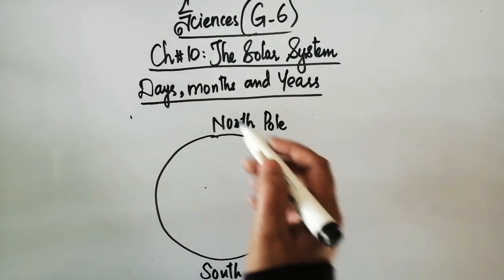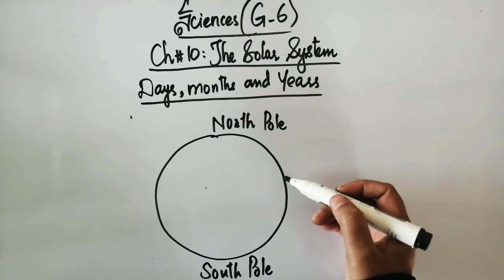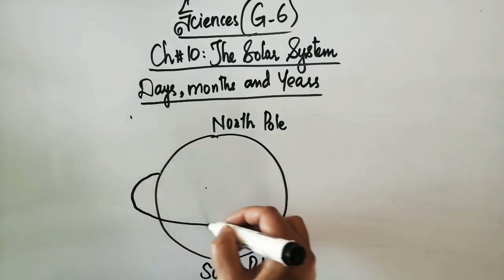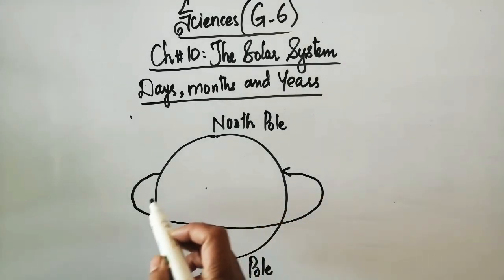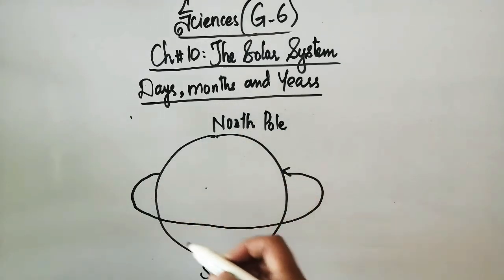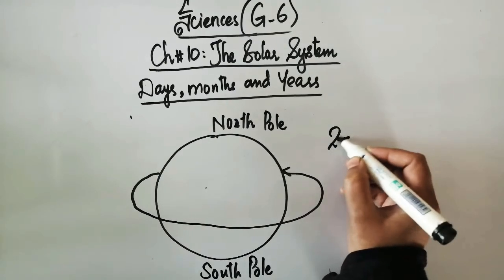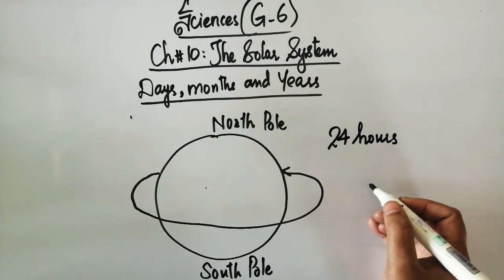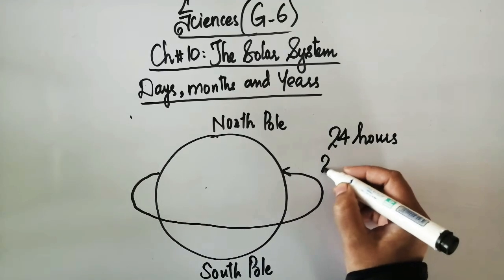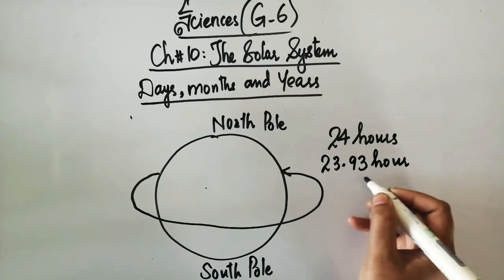So the earth spins on an axis through the north and south pole. And the time taken for one complete rotation of the earth is 24 hours. It is about 24 hours. Approximately, if we look at the precise value, it becomes 23.93 hours.